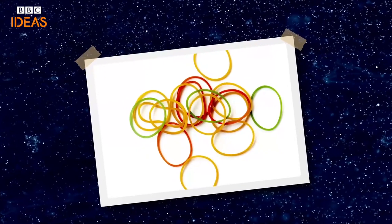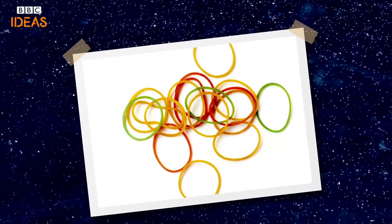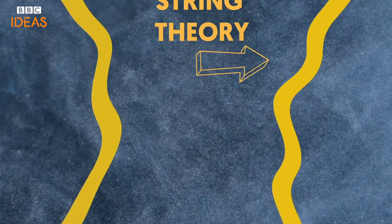Of course Dr. Kaku doesn't mean an actual rubber band, but rather something rubber band-like. Or, to put it another way, the strings in string theory. And just like the strings on a musical instrument, if you put some energy into them, they vibrate. It vibrates one way, we call it an electron.